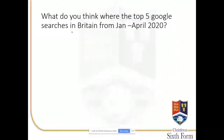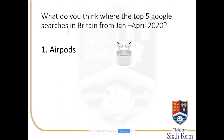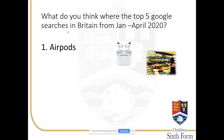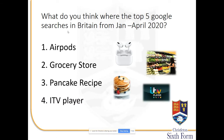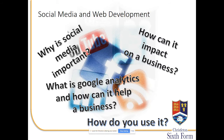One thing to think about, especially for the social media unit, is what is topical within the country at a given time. Here's a little activity: what do you think the top five Google searches were in Britain from January to April? Feel free to pause and test yourself. The answers were: number one airpods, number two grocery store, number three pancake recipes, number four ITV Player, and number five hot tubs — all linking to the start of the COVID crisis.